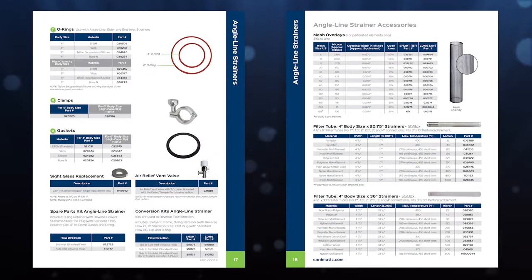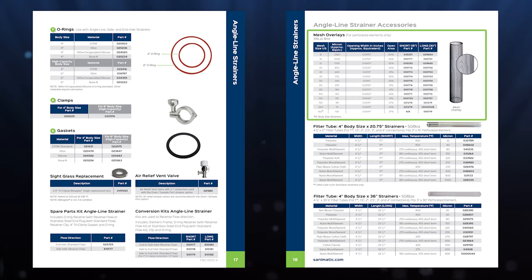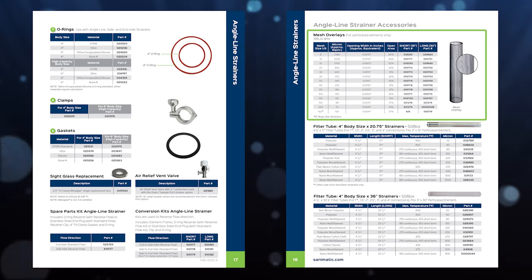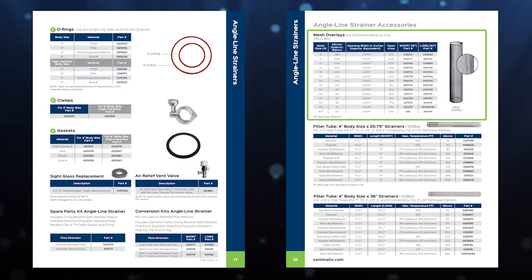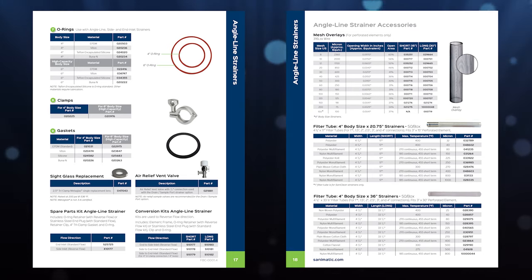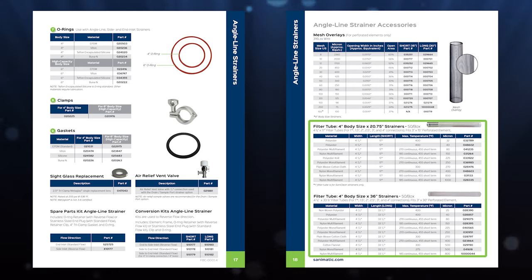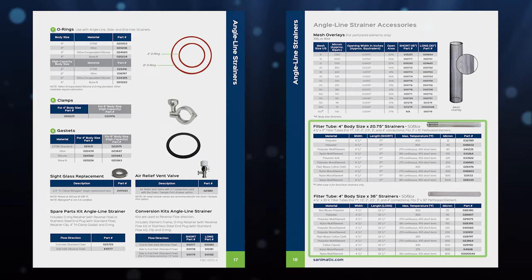If you're using a perforated element and looking for mesh overlay or filter tube information, under the accessory section of the applicable strainer section we also have information on that. For mesh overlays, sizing is based off of mesh size US, but that also comes in microns or opening width in inches. You can find the equivalent mesh size that we have. Open area percentage information is also in this table. If you're using a filter tube with a perforated element, the specification size we use is micron. Under the filter tube section, you can see the different micron ratings and the materials and max temperatures associated with those particular filter tubes.